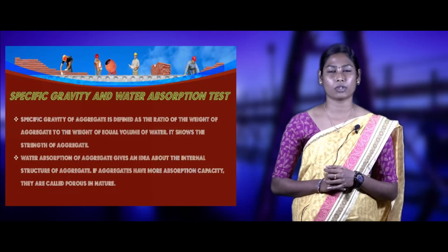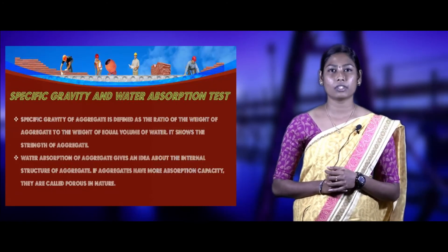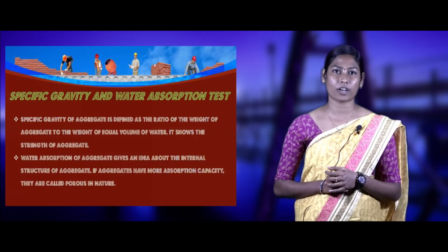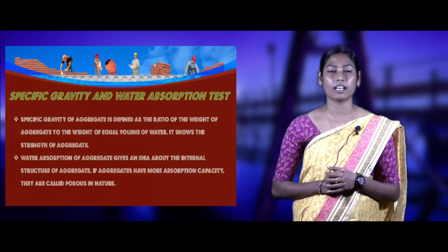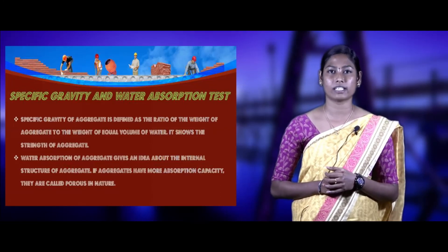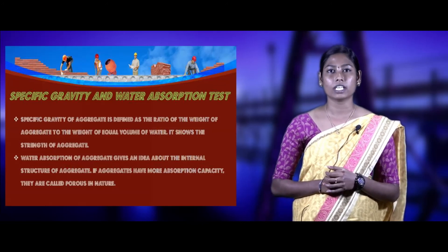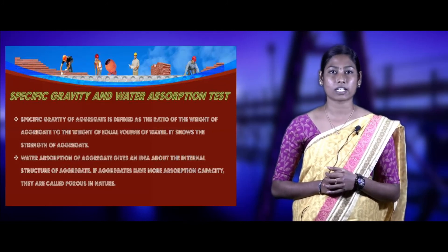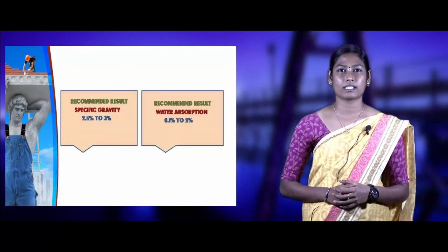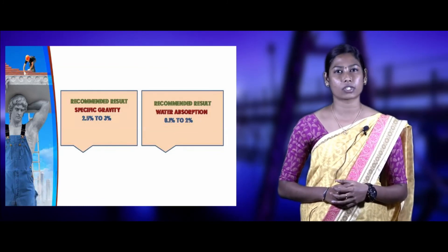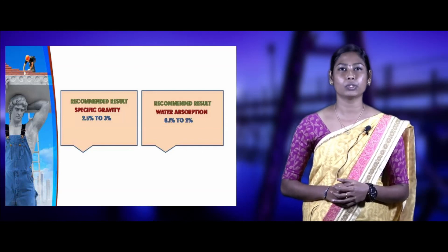Specific gravity of aggregates is defined as the ratio of weight of aggregate to the weight of an equal volume of water. It shows the strength of aggregates — aggregates having low specific gravity are generally weaker. Water absorption of aggregates gives an idea about the internal structure of aggregates. If aggregate has a high water-absorbing capacity, it is porous in nature and such aggregates are not suitable for construction works. Recommendation results: specific gravity of aggregate ranges between 2.5 to 3 for construction works, and water absorption should be 0.1 to 2%.